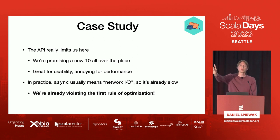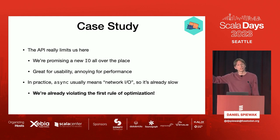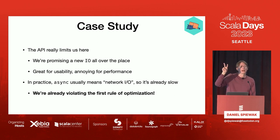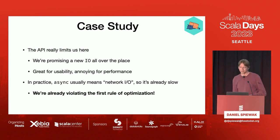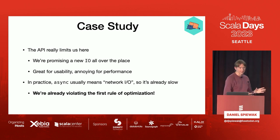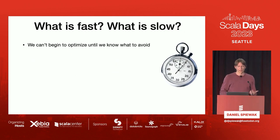Rule number one of optimization: don't do it. Rule number two: figure out what is actually slow, and then optimize that — don't optimize other things. We're already breaking both of those rules because we're doing micro-optimization and optimizing something completely irrelevant. But we're doing it anyway because it's really actually very fun. So if we're going to optimize stuff, we need to build an intuition about what things in computers are fast and what things are slow.